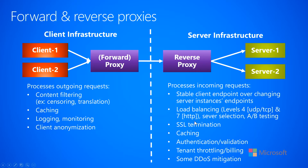You can use reverse proxies to do caching. The first client request that comes in goes out to a server, the server sends a result, and then the reverse proxy can cache that. Any future requests for the same data, the reverse proxy can just return it without forwarding to a back-end service. This reduces load on your back-end services, allowing you to save money because you don't need as many machines running if certain cached information is queried frequently by many clients.